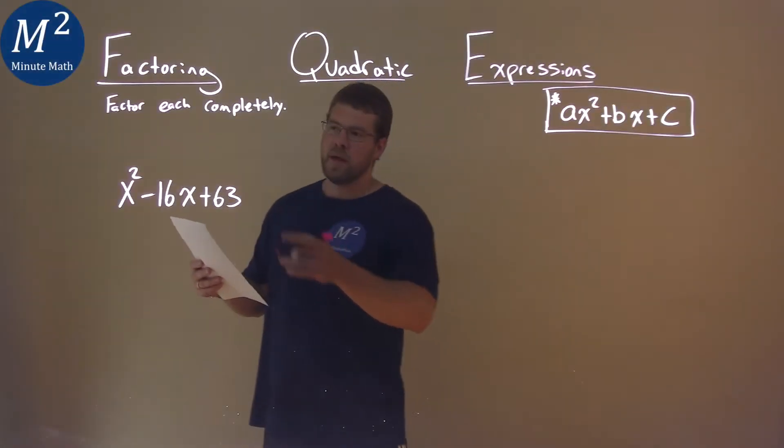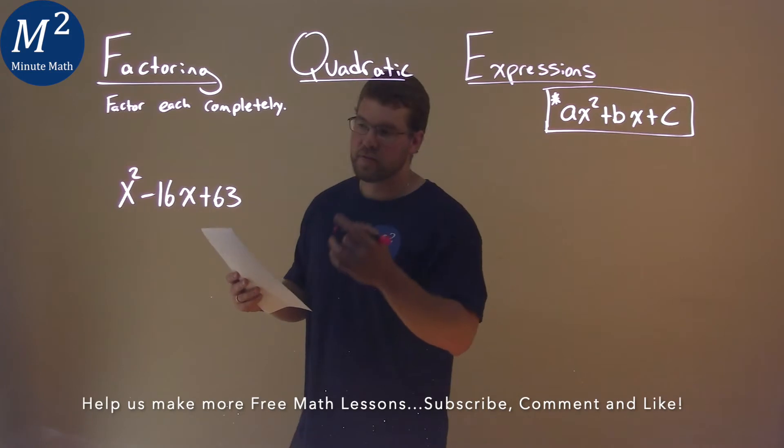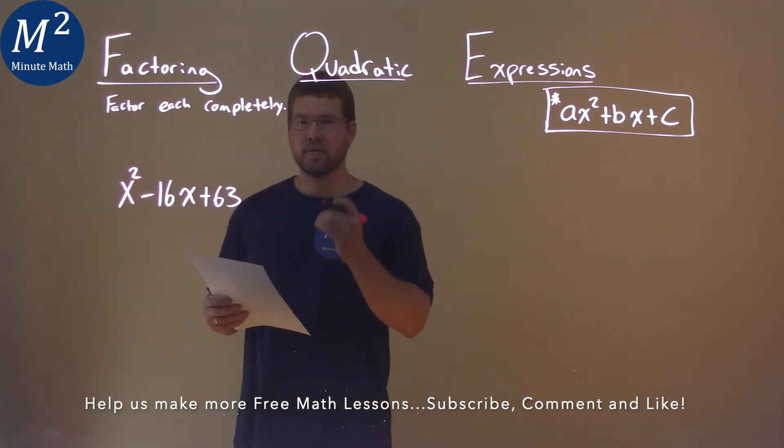We're given this problem right here, x squared minus 16x plus 63, and we need to factor this completely.